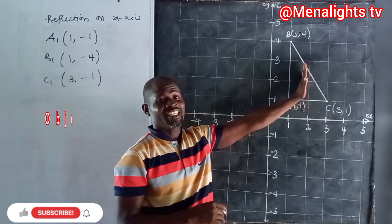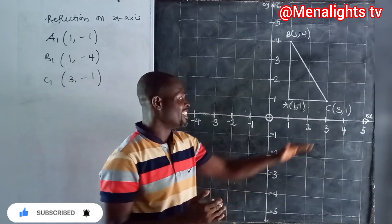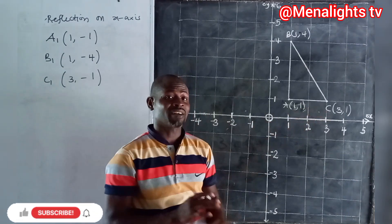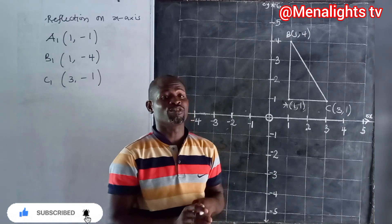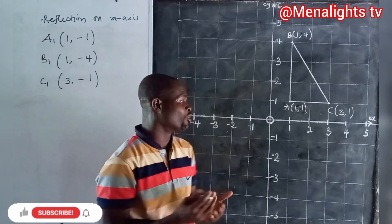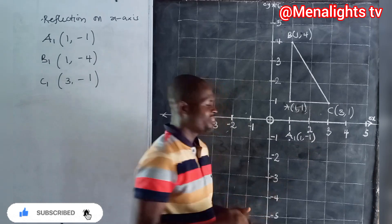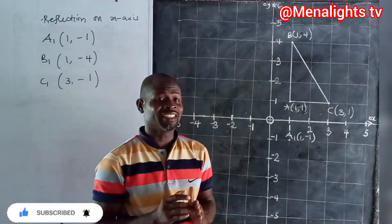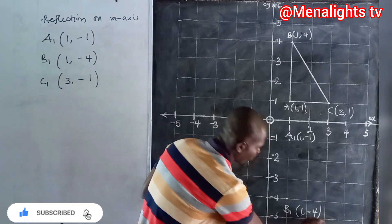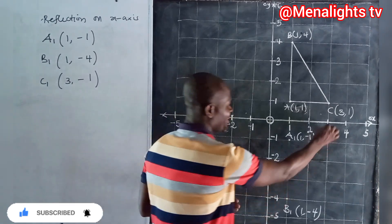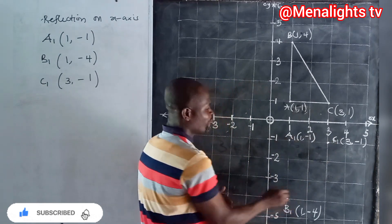Since the object is drawn, we now reflect it on the x-axis. The x-axis becomes the mirror line — placing a mirror there gives us the reflected image. On the x-axis reflection, the y-coordinates are negative. So A₁ is (1, -1), B₁ is (1, -4), and C₁ is (3, -1). We join these points to form the reflected triangle — this is the image on the x-axis.